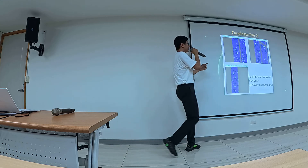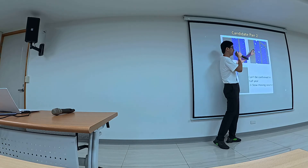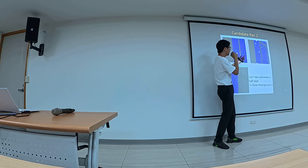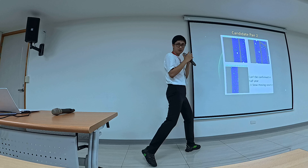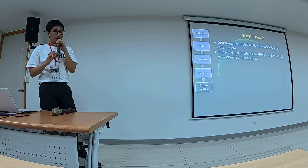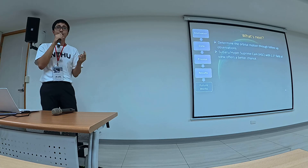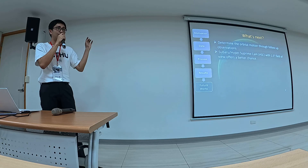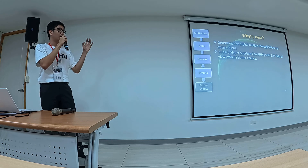In the next step, we aim to determine the orbital motion of Planet 9 candidates through follow-up observations. The Subaru Hyper Suprime-Cam can offer a better chance with its wide field of view to confirm or rule out these candidates.